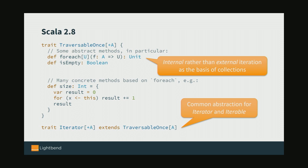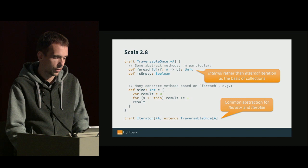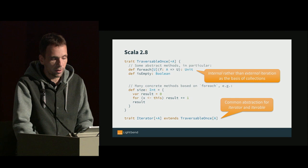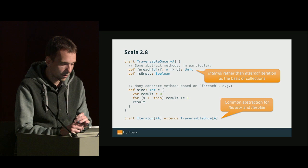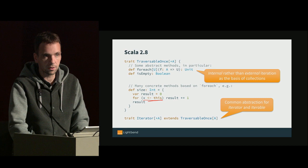Why is it called Traversable? Because it uses internal rather than external iteration — there's no way to get an iterator from a Traversable. You can only call forEach on it and have it iterate internally. It's also TraversableOnce because you only guarantee a single traversal, which means we can use it to abstract over iterators as well, which will be exhausted after a traversal. It has many concrete methods implemented in terms of forEach, like the size method — you iterate over the current collection and that's all you need for size. And of course, Iterator can extend TraversableOnce.